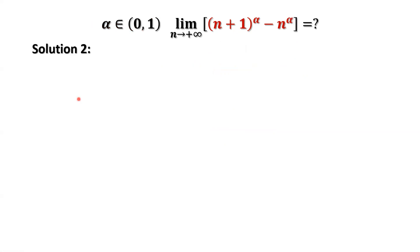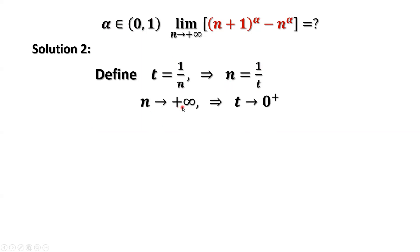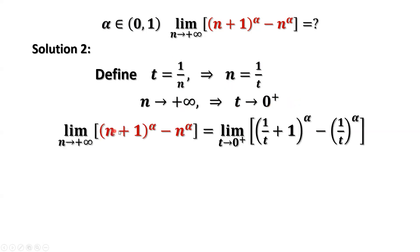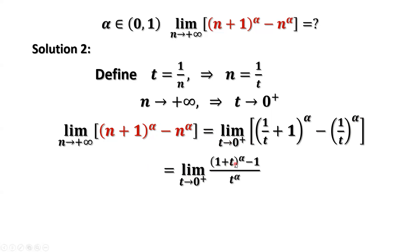The second method uses calculus. We define t equals one over n. Therefore n equals one over t, and as n goes to positive infinity, t goes to zero from the right-hand side. The original limit can be rewritten in terms of t as the limit of (one over t plus one) to the power of alpha minus (one over t) to the power of alpha, as t goes to zero from the right. Simplifying, we have the limit of (one plus t) to the power of alpha minus one, divided by t to the power of alpha, as t goes to zero from the right.